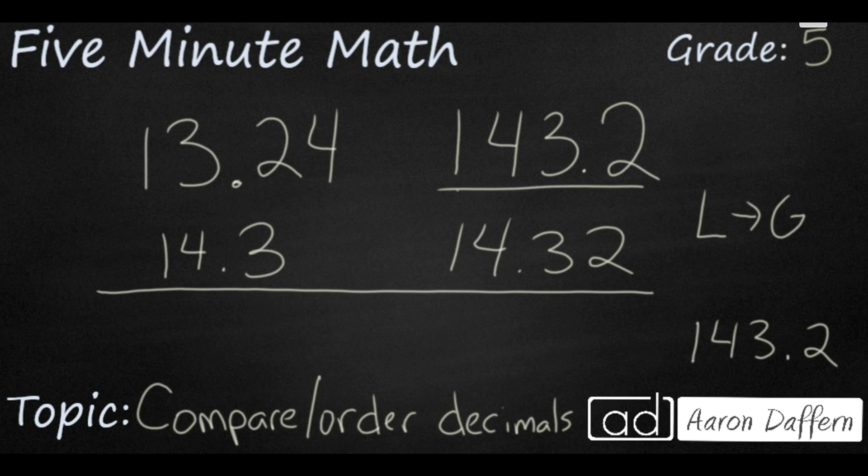But if I'm looking for the smallest number, I see that the rest of our numbers all have a 1 in the tens place. So then we're looking in the ones place because you always go from left to right. And you see here that 3 is our smallest. So we're going to go ahead and write our 13 and 24 hundredths over here. And what we're going to do is write a less than sign.